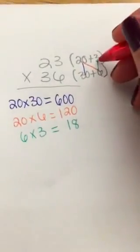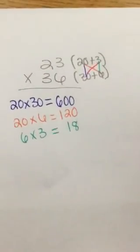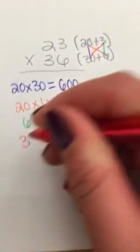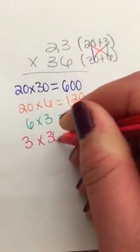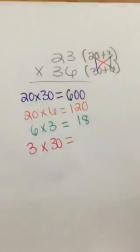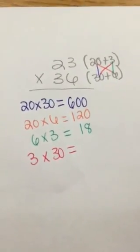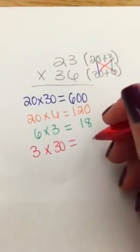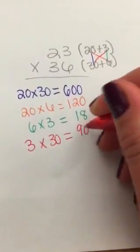And then my last step is the last diagonal, 3 times 30. So I'm going to write that down here on my paper. 3 times 30, I know 3 times 3 is 9 plus a multiple of 10 is 90 and I line all that up.